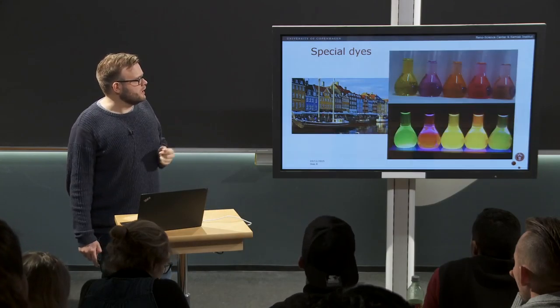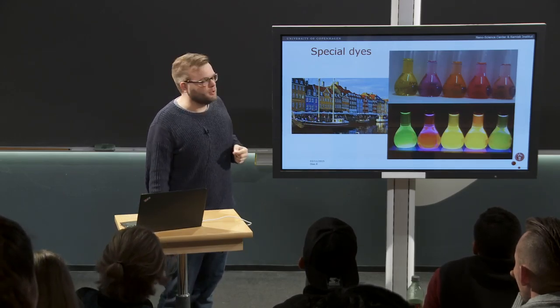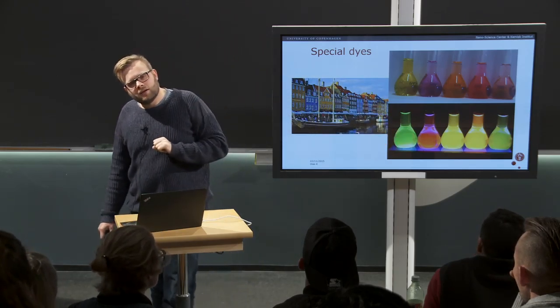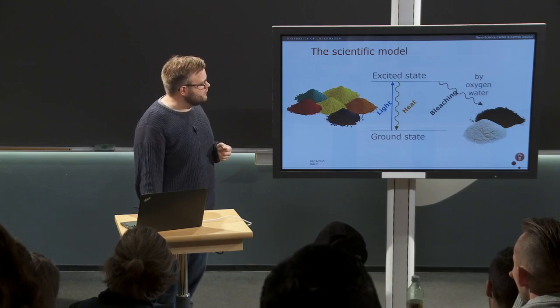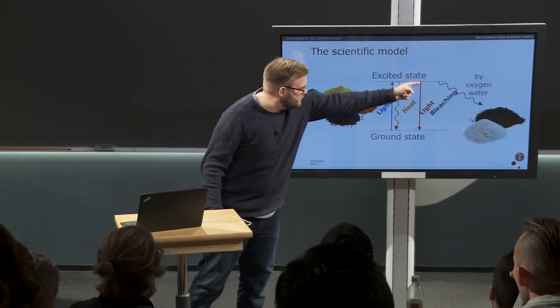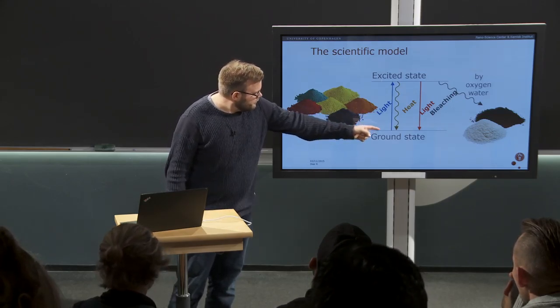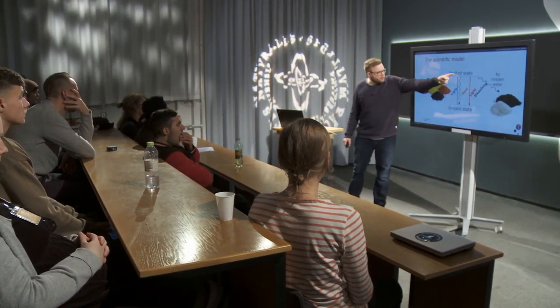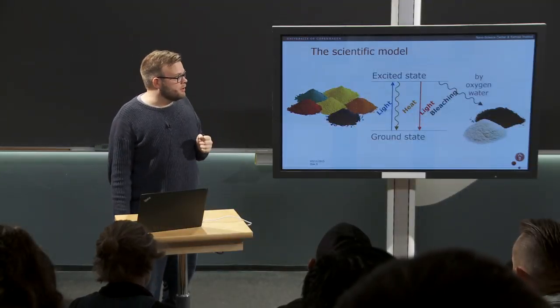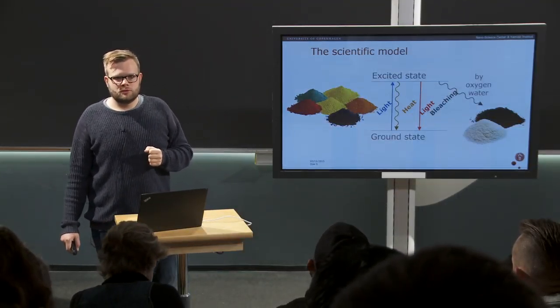My research is concerned with special dyes — dyes that don't only do those processes, but they can also, when absorbing light, emit it again as light in a slightly different color. So the dyes I work with are fluorescent dyes, or luminescent dyes, or phosphorescent dyes. In our scientific model we have to add another process — a light emission process. The problem is that light emission only occurs if the conversion of excited state energy into heat is slow. So light emission is a slow process: the molecule spends a lot of time in the excited state, which makes bleaching highly probable. So it is important, if you want to make a good emissive dye, to eliminate bleaching. My research is focused on making dyes that do not bleach at all.